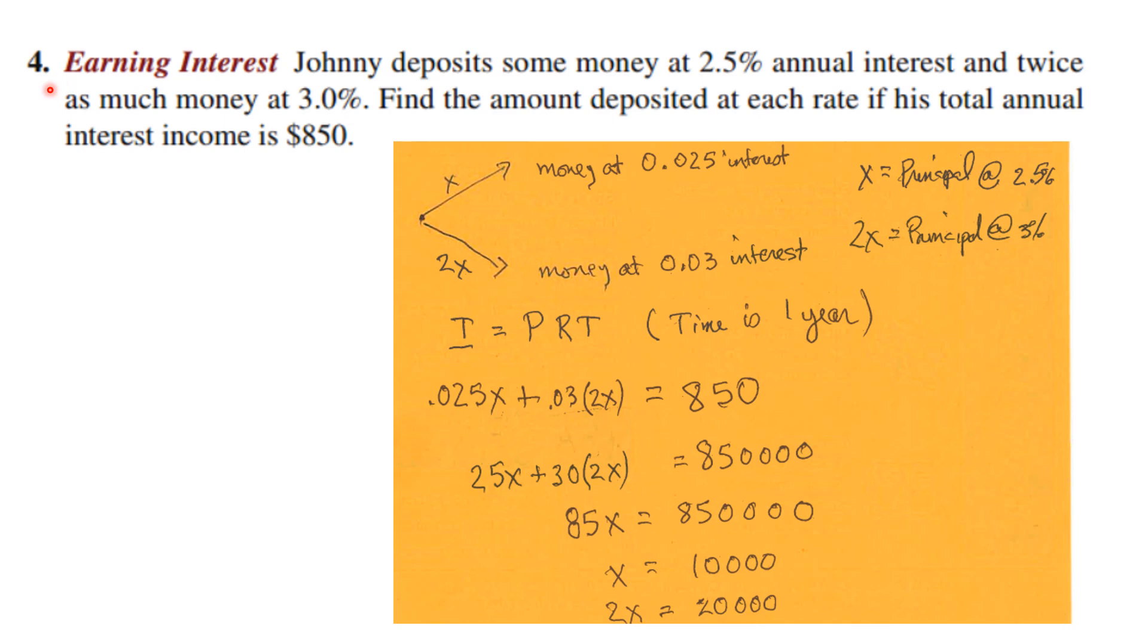Number four is a word problem about earning interest. Johnny deposits some money at 2.5% annual interest rate and twice as much money at 3%. Find the amount deposited at each rate if his total annual interest income is $850.